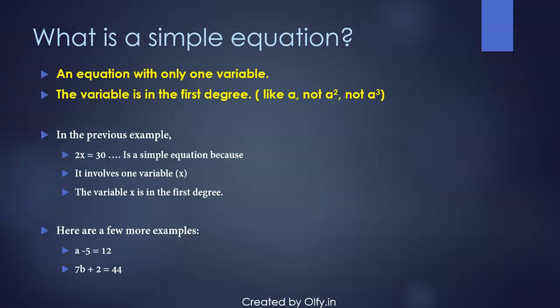Now a simple equation is an equation with only one variable - that is the first condition. And the second condition: the variable should be in the first degree, like x or a or b. It cannot be x square or a square or b cube or b to the power 4. So the power should always be 1, that's what it means first degree.